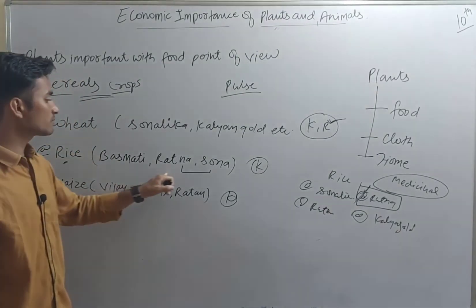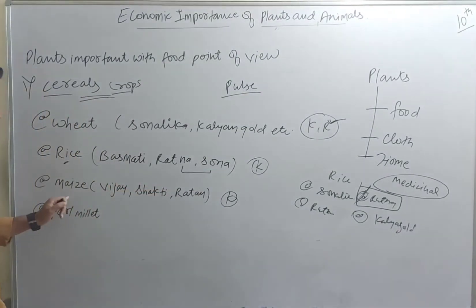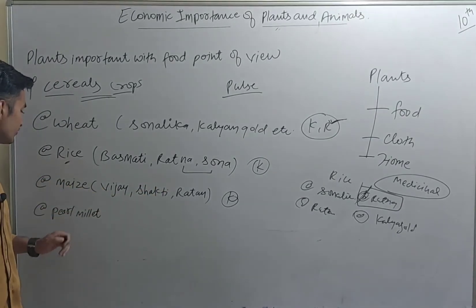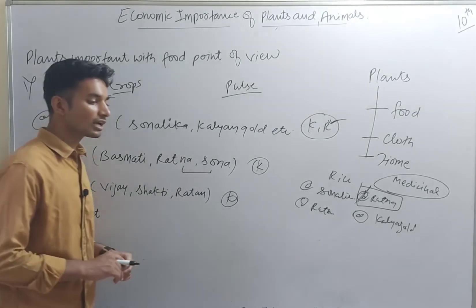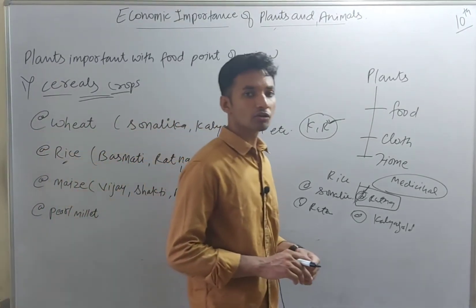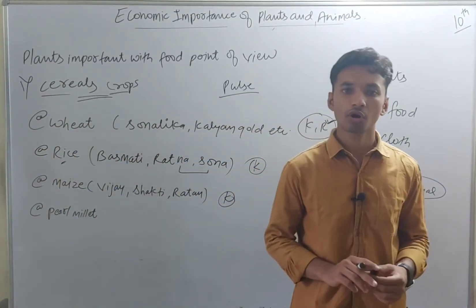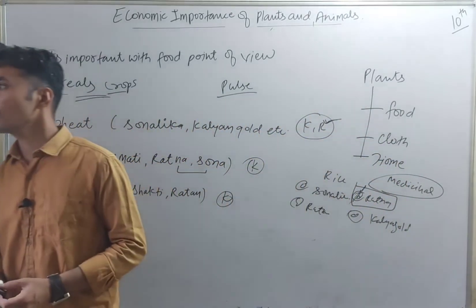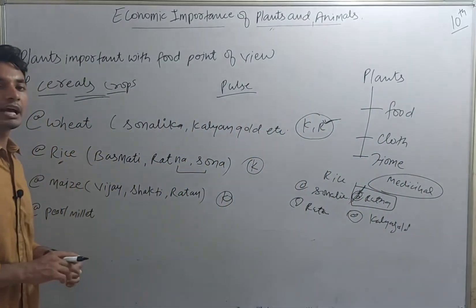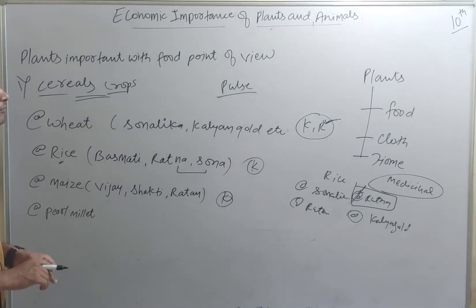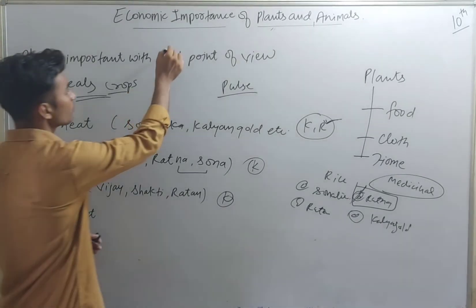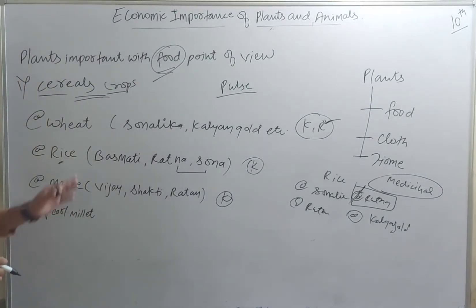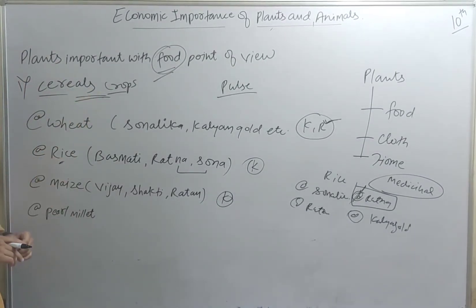To summarize: rice varieties are Ratna and Sona; maize varieties are Vijay, Sakthi, and Ratan. Next, we have pearl millet, which is also an important cereal crop from an economic point of view, particularly in the context of food plants.